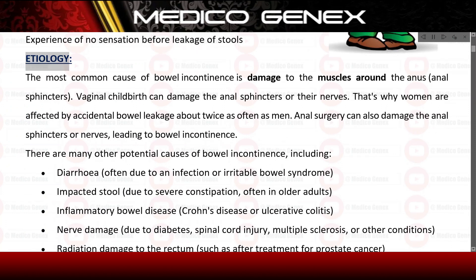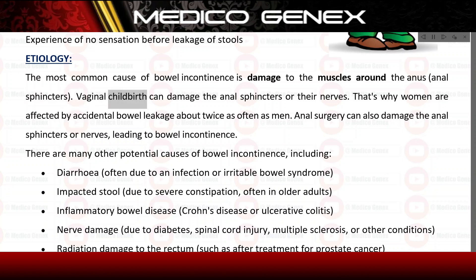Etiology. The most common cause of bowel incontinence is damage to the muscles around the anus — the anal sphincters. Vaginal childbirth can damage the anal sphincters or their nerves, which is why women are affected by accidental bowel leakage about twice as often as men.